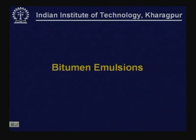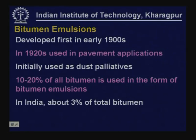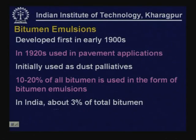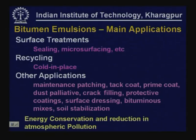We will start with bituminous emulsions. These were developed first in the early 1900s; in the 1920s emulsions were used in pavement applications, initially as dust palliatives to control dust problems. About 10 to 20% of all bitumen used worldwide is in the form of bitumen emulsions, whereas in India we are using about 3% of the total bitumen used. The main applications of emulsions are in surface treatments such as sealing the surface or micro-surfacing the pavement surface.